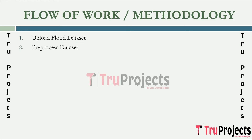The next step is pre-processing the dataset. Pre-processing is crucial for ensuring data quality and compatibility with the modeling process. Common pre-processing steps include handling missing values, removing duplicates, scaling numerical features, encoding categorical variables, and feature engineering to create new informative features. Additionally, data normalization and standardization are applied to ensure that all features have similar scales, which aids in model convergence and performance.